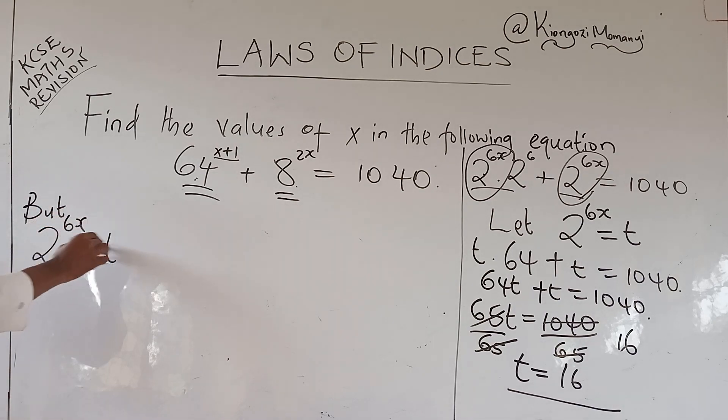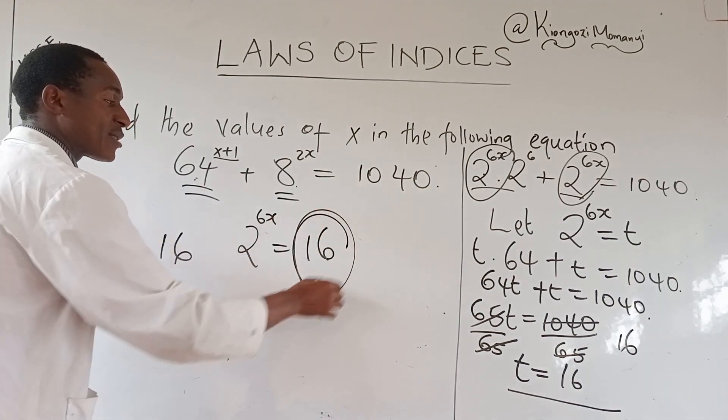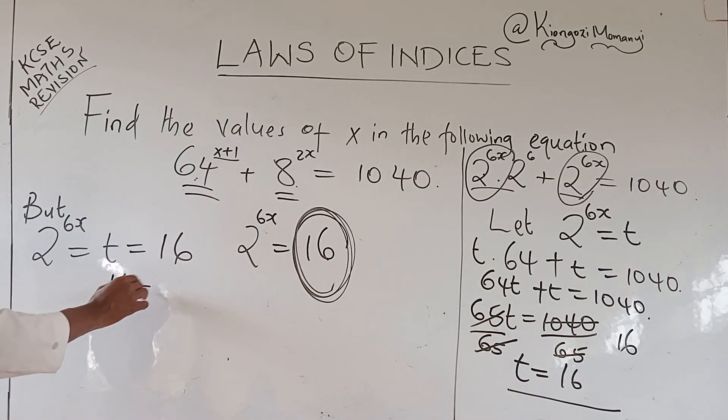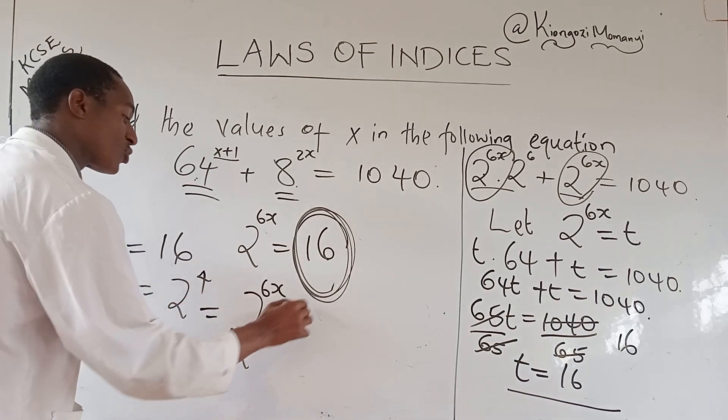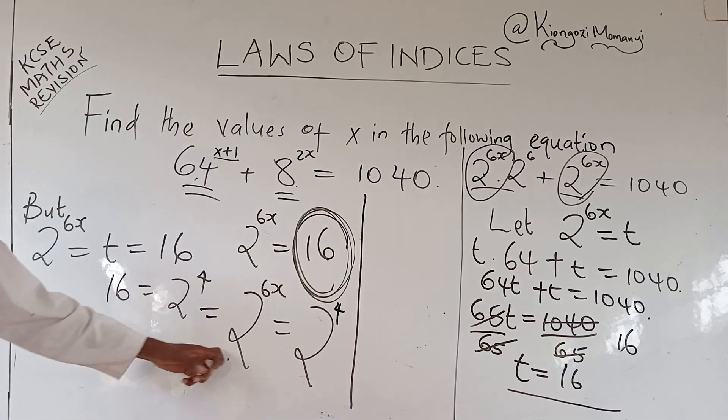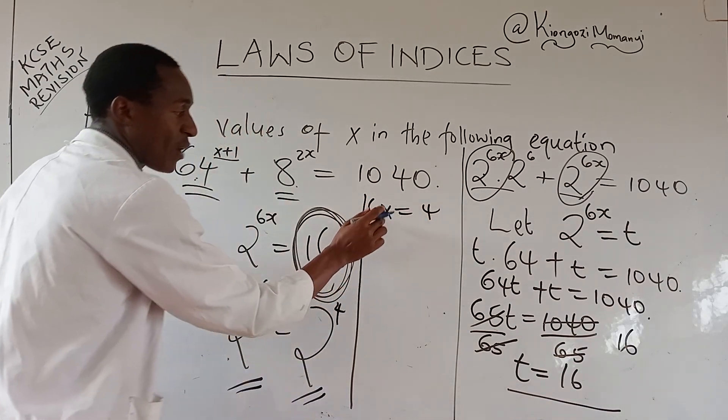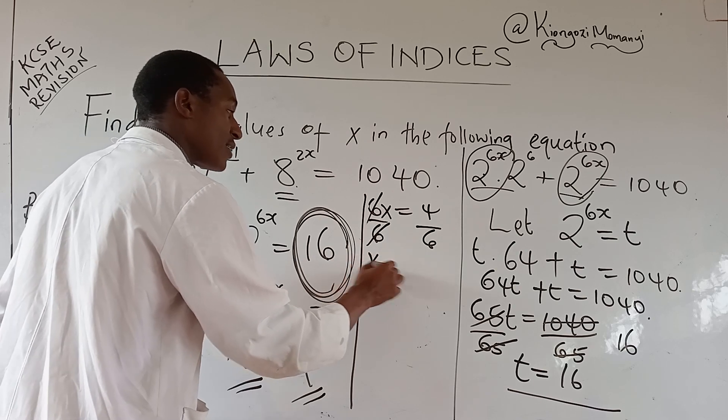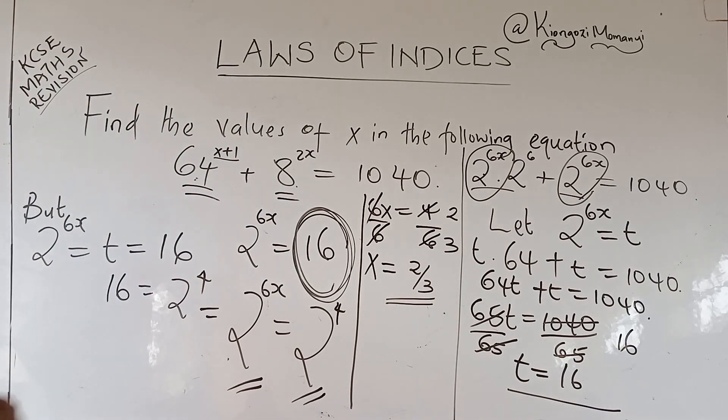But 2 power 6x was t, and now our t is 16. So we shall say 2 power 6x is equals to 16. Another one more thing, you do the prime factors of 16, but you must ensure they are to base 2 so that we have common basis. So we shall say 16 is the same as 2 raised to power 4. Now in this case, we shall say 2 raised to power 6x is equals to 2 raised to power 4. We are now coming to the tail end. Common basis are drops and not cancelled. You take the powers. 6x is equals to 4. If you want x, you divide by 6 on both sides. 6 cancelled with 6. Then we have x is equals to 2 over 3. So that is what you do.